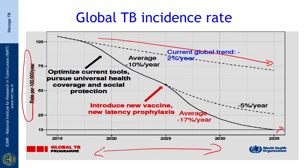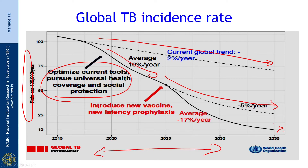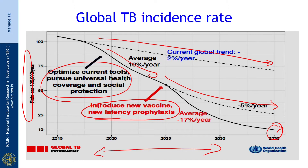By optimizing current tools — better diagnosis, more efficient treatment, pursuing universal health coverage and social protection — we can increase this decline to 10 percent per year. Even then, by the year 2035 you are not going to achieve a 90 percent reduction; you may reach about 75 percent reduction. To achieve the 90 percent reduction in incidence rate by 2035, we need to introduce new vaccines and treat latent TB. Only then is there any hope of achieving the targets set by the End TB strategy of the WHO.